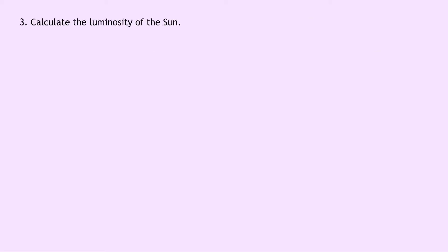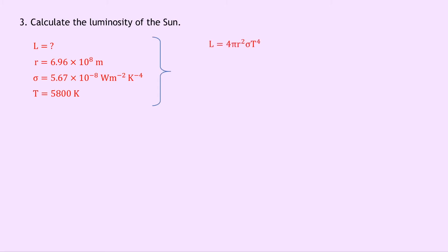Question 3 says to calculate the luminosity of the sun. We're trying to find L. We know the radius of the sun from the datasheet is 6.96 times 10 to the 8 meters, sigma is 5.67 times 10 to the minus 8, and the surface temperature of the sun is 5800 Kelvin — remember that value is not on the datasheet. Writing down our equation: L equals 4 pi r squared times sigma T to the 4. Substituting in and putting it into your calculator — remembering the square and the power of 4 — gives 3.9 times 10 to the 26 watts.